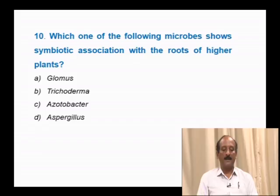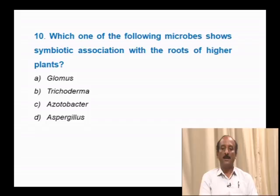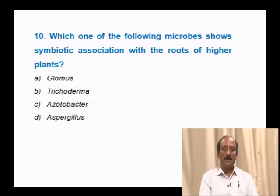Question number 10: Which microbe shows symbiotic association with roots of higher plants? Options: Glomus, Trichoderma, Acetobacter, Aspergillus. Glomus is a kind of mycorrhiza associated with the roots of higher plants, helping in absorption of phosphorus and giving protection against root-borne diseases. Trichoderma is used in biological pest control. Acetobacter and Aspergillus are free nitrogen-fixing bacteria. The correct answer is option A: Glomus.